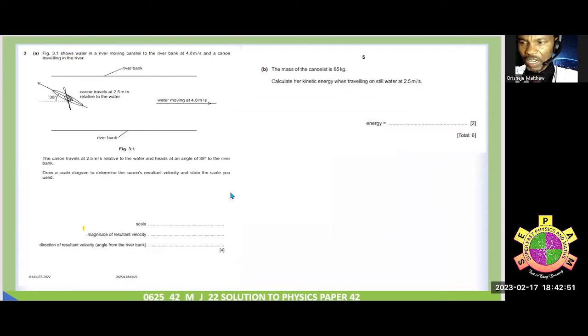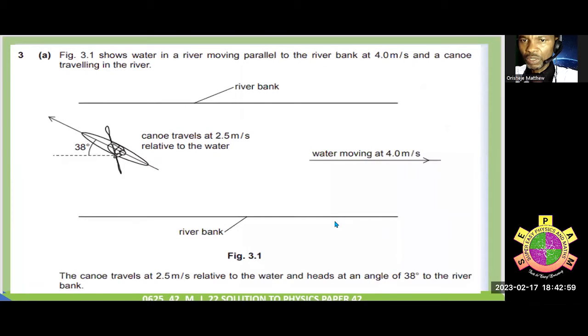Now this is what the question is all about. And we have six marks. We're expected to get six marks from this question. If you look at this question, we say, figure 3.1 show water in a river moving parallel to the river bank at the speed of four meters per second and a canoe traveling in the river. The canoe is traveling upstream. And it's showing there the diagram at the rate of two meters per second, while the river water is flowing downstream at the speed of four meters per second.